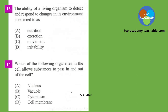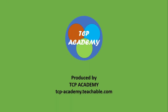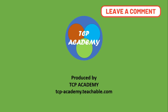Question thirteen: the ability of a living organism to detect and respond to changes in its environment is referred to as — again from the 2020 paper. Question fourteen: which of the following organelles in the cell allows substances to pass in and out of a cell? Some of these questions may be from the January paper and some from the June paper. Make sure you did your best in scoring all 14 marks.